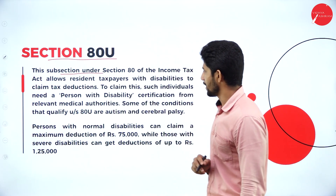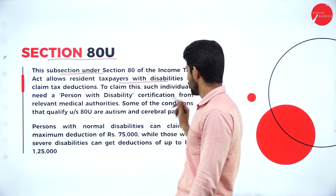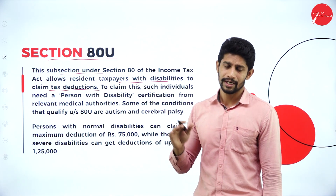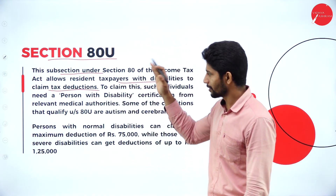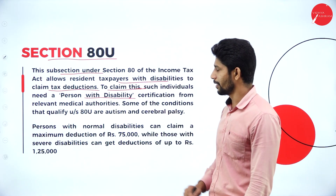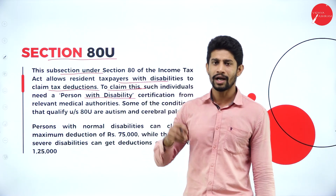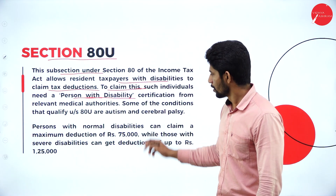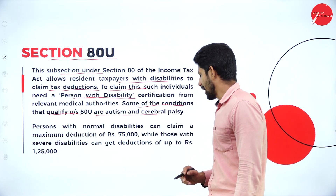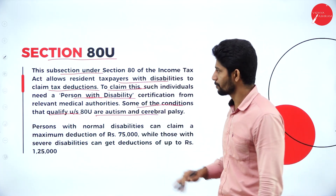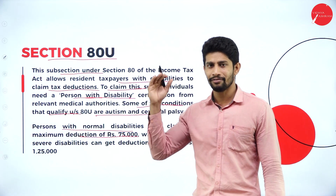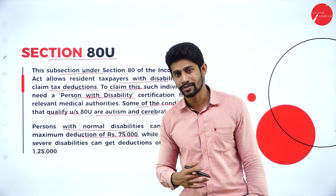Section 80U — this subsection under Section 80 of the Income Tax Act allows resident taxpayers with a disability to claim tax deductions. If any assessee is a resident of India and is disabled, they can claim deductions. To claim this, such individuals need a Person with Disability certificate from the relevant medical authorities. Some conditions that qualify under Section 80U include autism and cerebral palsy. A person with normal disabilities can claim a maximum deduction of 75,000 rupees under Section 80U.